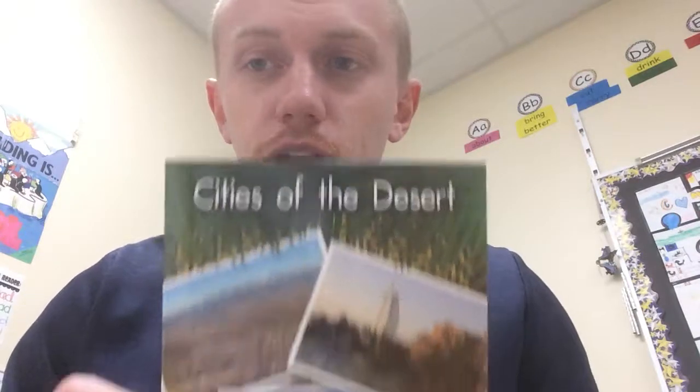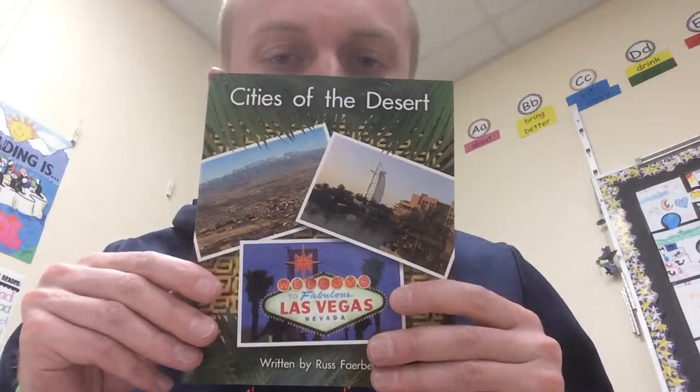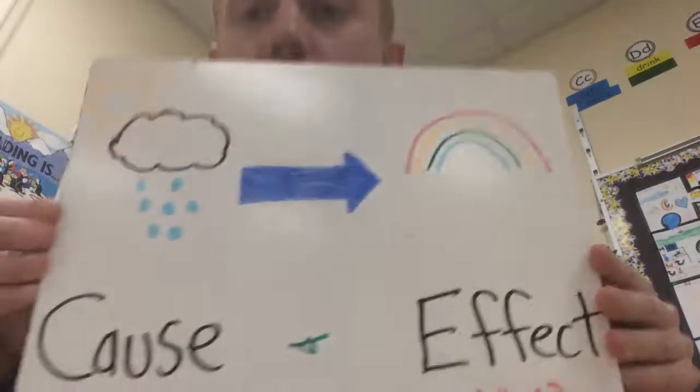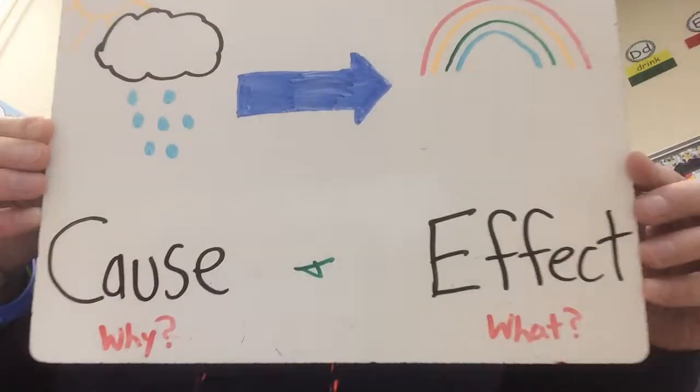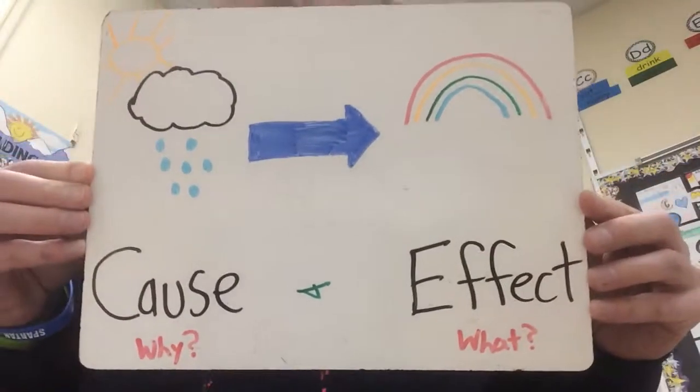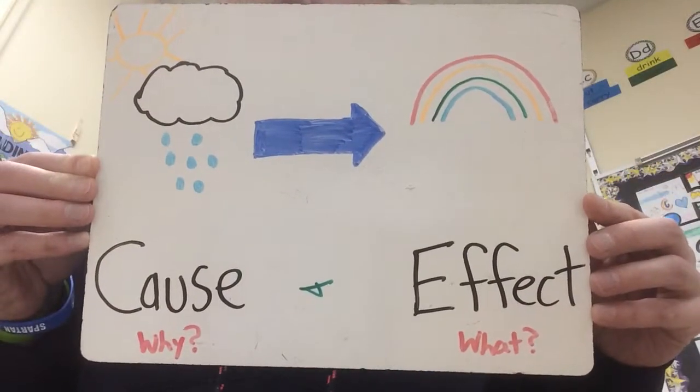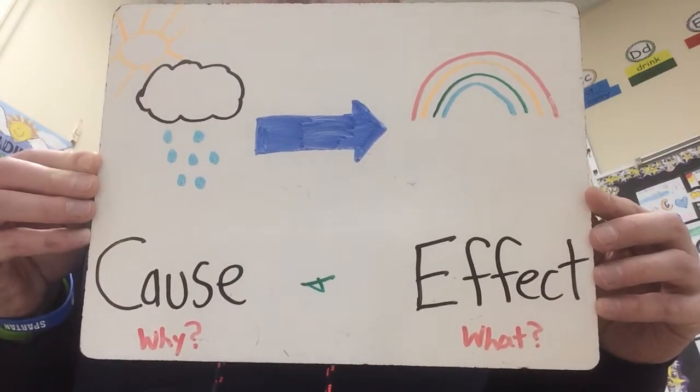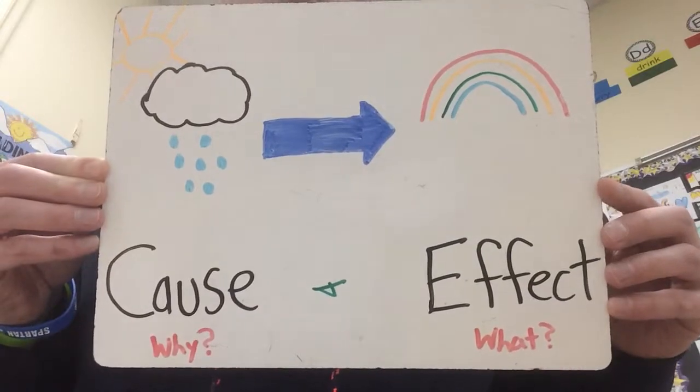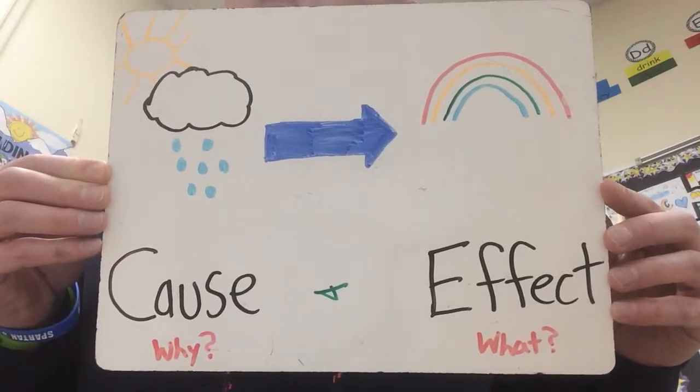Hey everybody, we are on day three of reading the book Cities of the Desert, and we are still going to be using our cause and effect strategy. The effect is what happens and the cause is why did that happen.